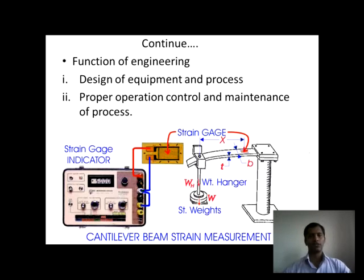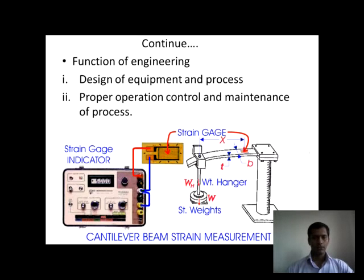We can see that a cantilever beam is loaded at its free end and we are applying a load to it. We are getting maximum strain at its free end, and we are measuring this strain with the help of a strain gauge. That strain gauge gives the strain reading to the strain gauge indicator. The strain gauge indicator is a well-calibrated device which is connected to the strain gauge.